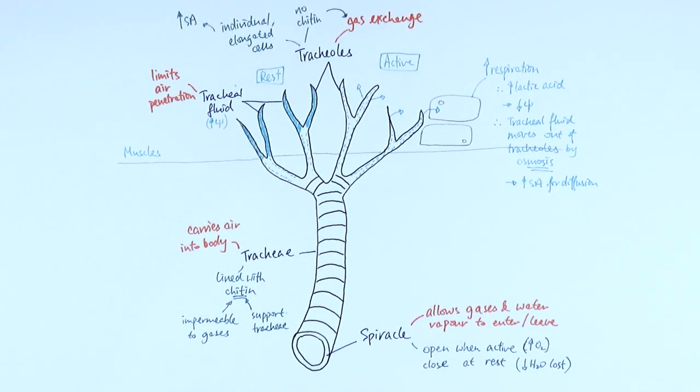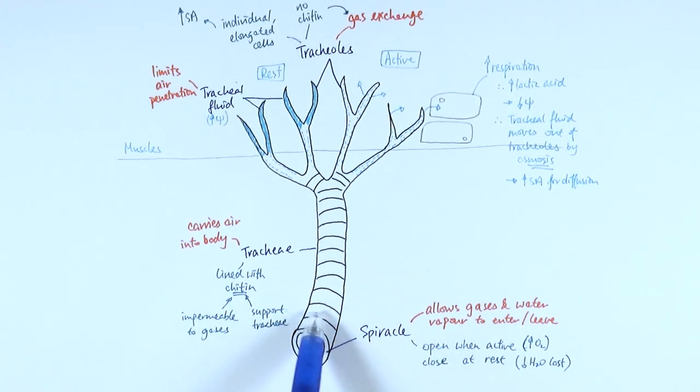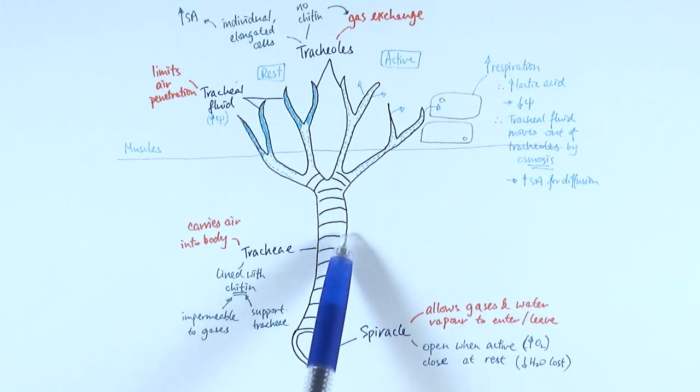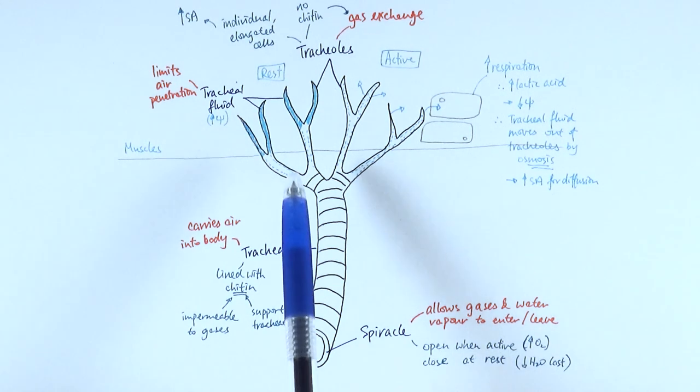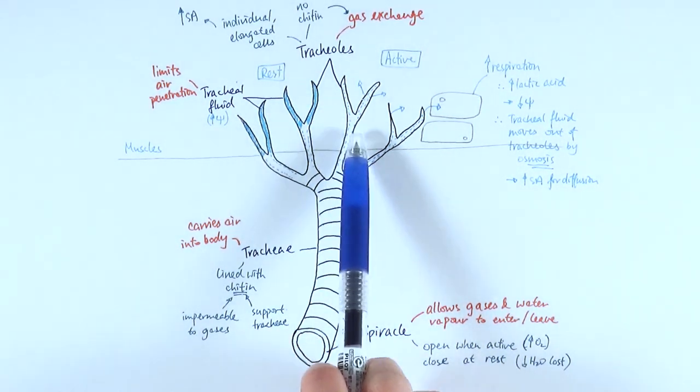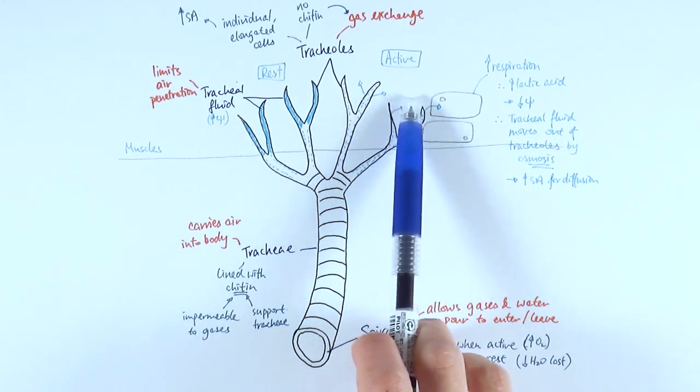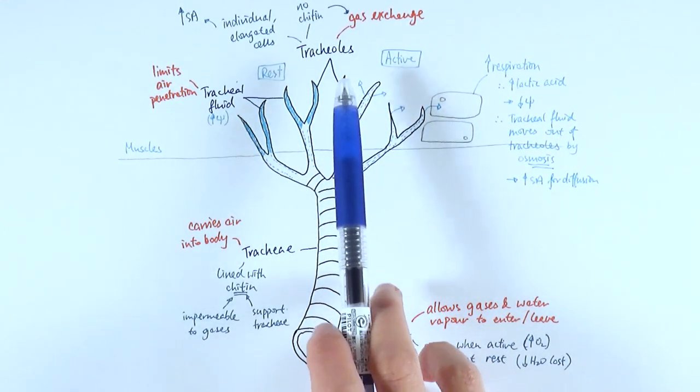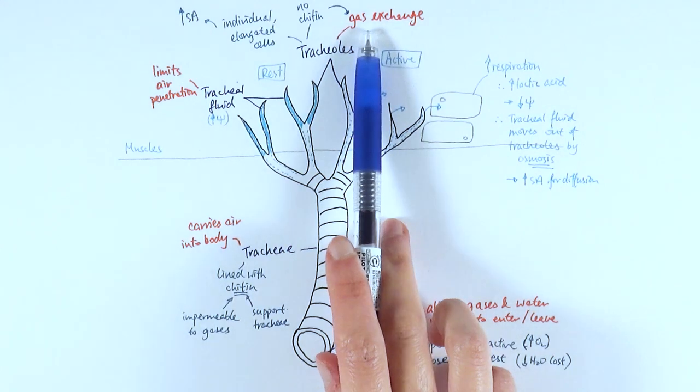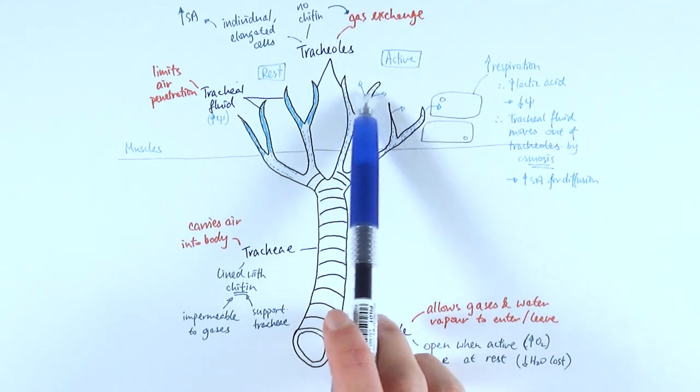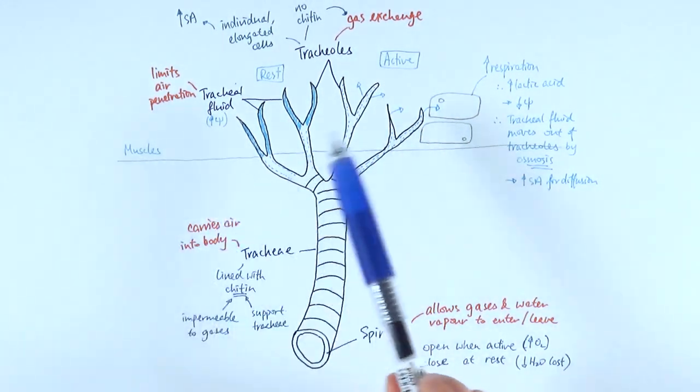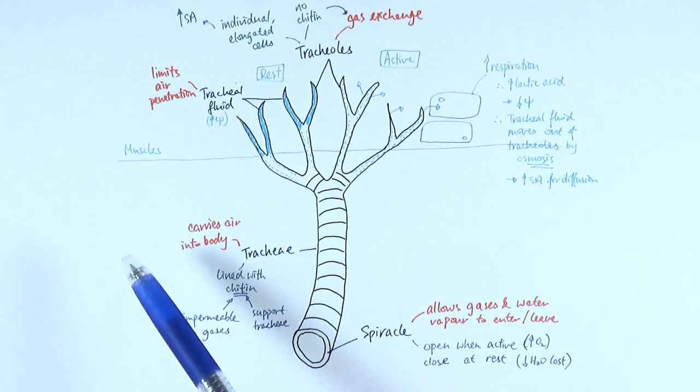They've got chitin lined along it, which is impermeable to gases and also supports the trachea and stops it from collapsing. Then it will branch off into tracheoles, which are individual elongated cells for a high surface area for efficient gas exchange. And it doesn't have any chitin in it, therefore they can allow the gases to actually move in and out of these tracheoles with the surrounding muscle cells next to it.